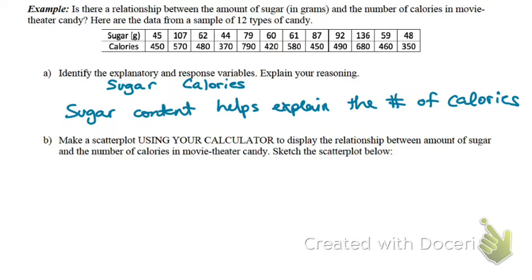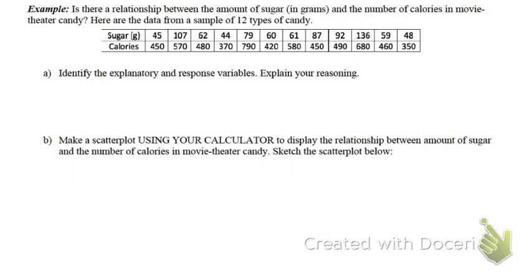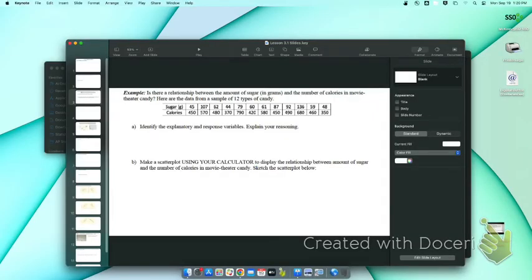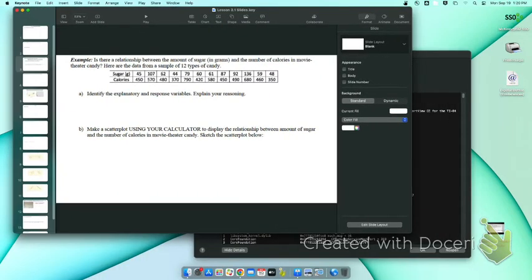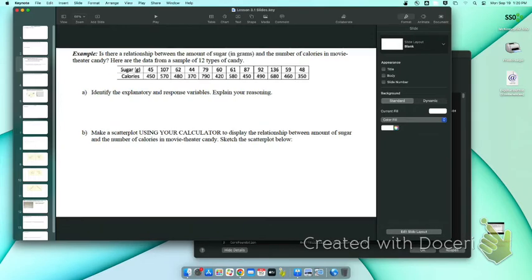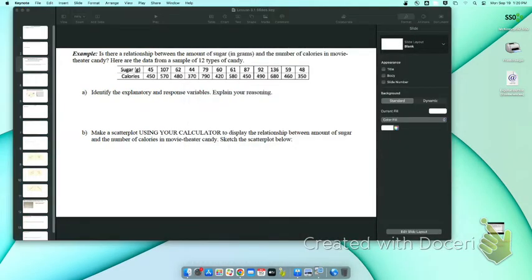I'm fairly confident that if you are sitting in AP statistics, I could have you guys make a scatter plot by hand. So what we're going to do is we're going to make a scatter plot using our calculator. If everybody can go to their calculator, what's the first thing you should do? Turn it on. Now, we need to put this data in our calculator. How do you put data in your calculator? Yeah, stat edit. We need to go to stat edit.